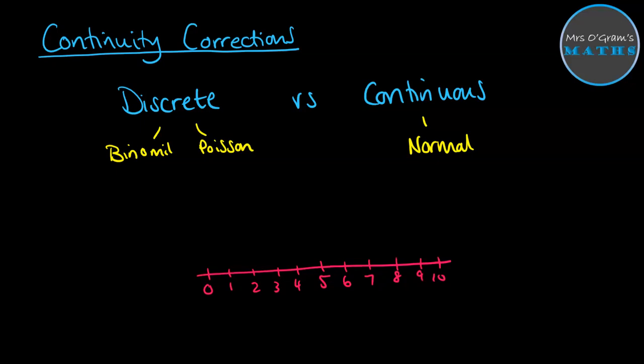But there are situations where we actually want to use the normal distribution and apply it to discrete data, because it's easier to work with. This could be if we've got a large amount of data, or rather the values go very big, which gets difficult if you're dealing with binomial and Poisson.